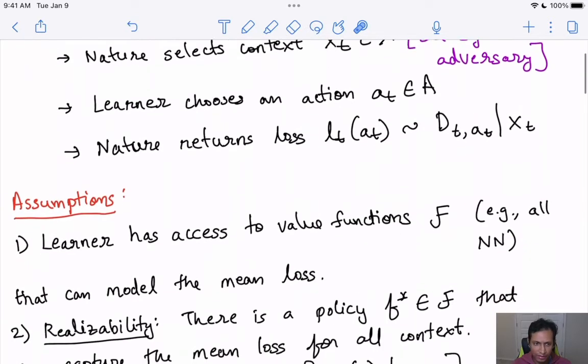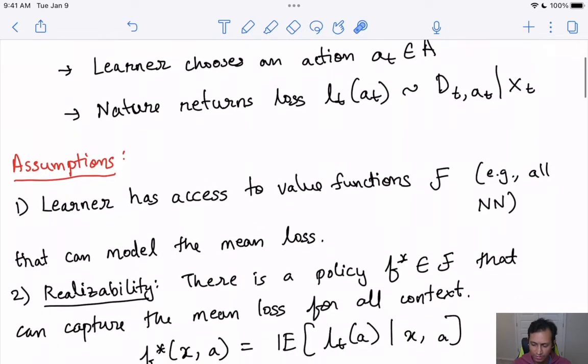The main assumptions in this setup are two. First, we assume that the learner has access to a value function F. We can think of F to be a large family, potentially infinite. You can think of it to be the set of all neural nets or all decision trees, which can model the mean loss well. The F here is the set of all machine learning models or architectures that you typically would try in a supervised learning model.